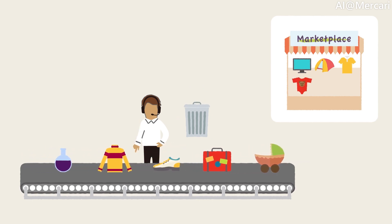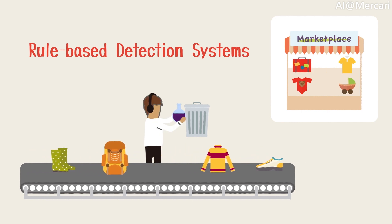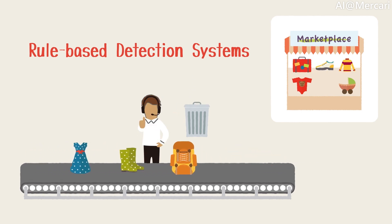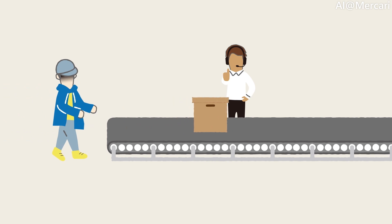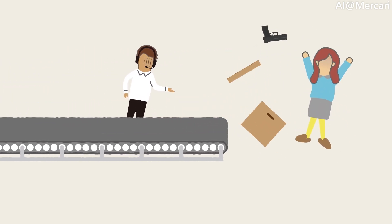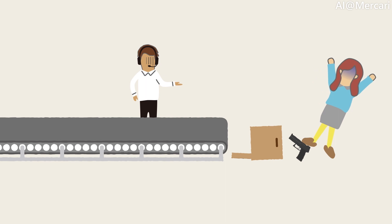For example, we have rule-based detection systems in place to catch possible violations. But these rule-based approaches can only catch trivial violations and can easily be manipulated by attackers.